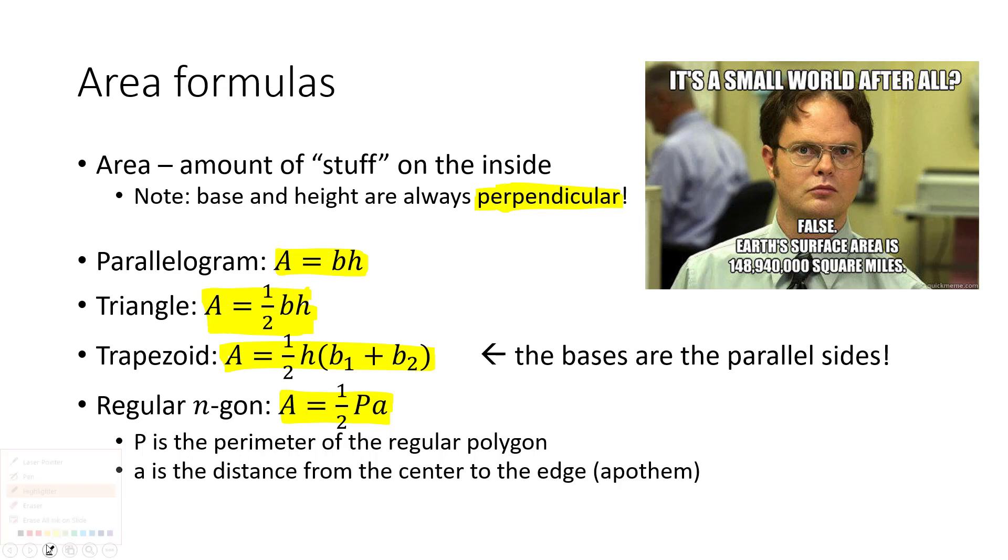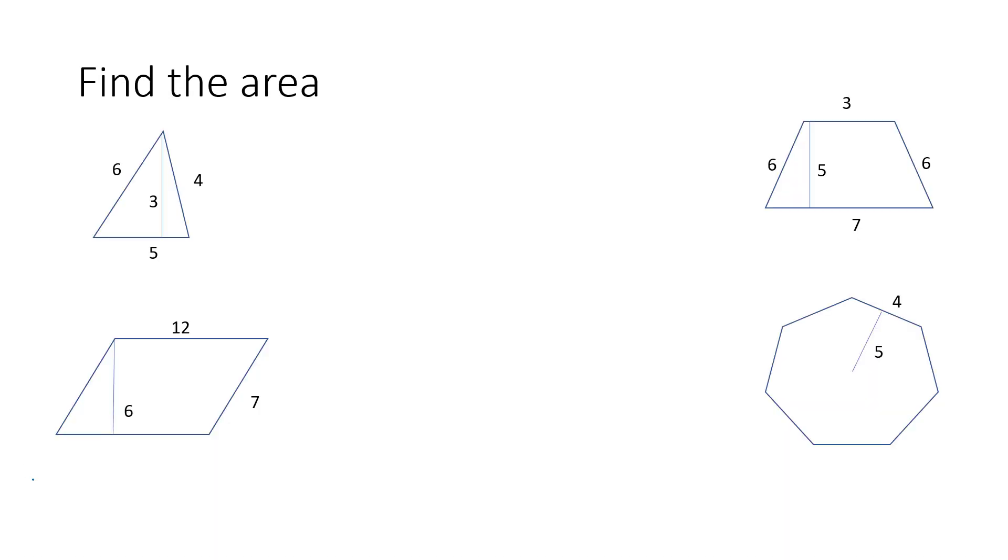So let's take a quick look at an example of each of these to make sure we can use these area formulas. This first shape's a triangle. Triangle is one half base times height. So we need to decide what's the base and what's the height. Remember, the important thing about the base and the height is that they are perpendicular. So here my height is 3 and my base is 5. The 6 and the 4 I don't care about because they're not perpendicular. They are not my height. So we really have one half times the base, which is 5, times the height, which is 3. And if I do that on my calculator, I get 7.5 square units.